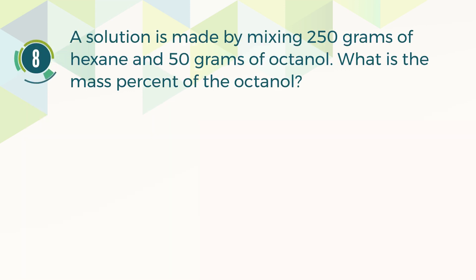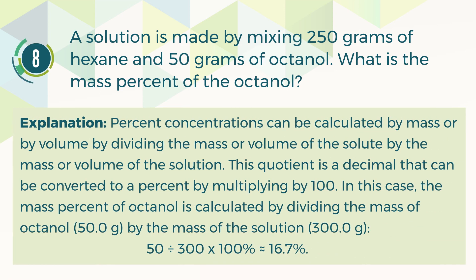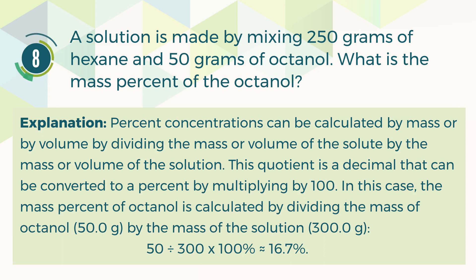Number eight. A solution is made by mixing 250 grams of hexane and 50 grams of octanol. What is the mass percent of the octanol? A. 16.7 percent. B. 20 percent. C. 50 percent. D. 83.3 percent. The correct answer is A, 16.7 percent. Mass percent is calculated by dividing the mass of the solute by the mass of the solution, then multiplying by 100. The mass of octanol is 50 grams divided by the total solution mass of 300 grams, which gives approximately 16.7 percent.